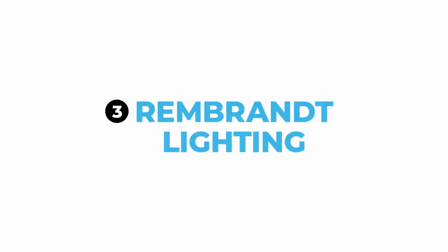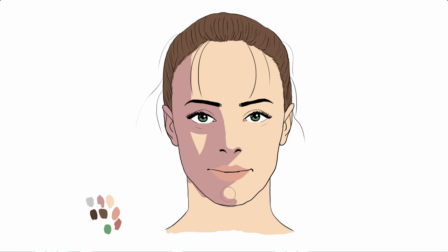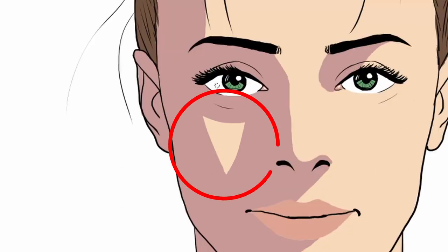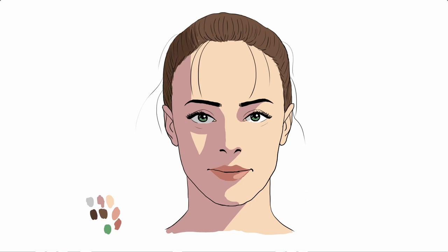The next lighting situation is called Rembrandt lighting. Rembrandt lighting starts out like loop lighting, it's very similar, but the light source is turned even more to the side of the face. That leads to the fact that the nose and the eye sockets throw an even longer and bigger shadow, as you can see right here. Also, the lower lip casts a big shadow that connects to the chin, and the chin itself casts a very big shadow that basically covers the whole left side of the neck. The key here is the little triangle of light in the shadow area, basically called the Rembrandt triangle. The name comes from famous Dutch painter Rembrandt, who used this lighting situation in many of his portraits.